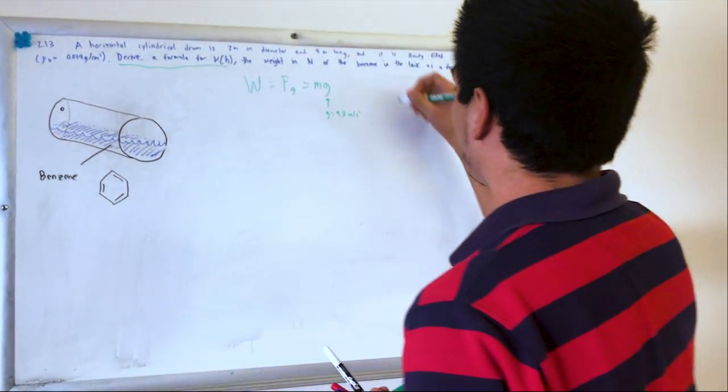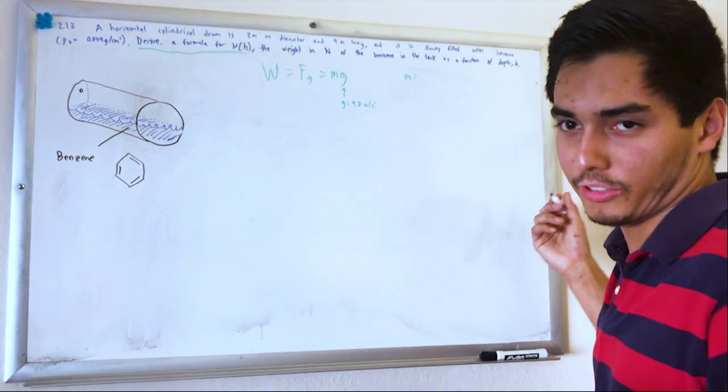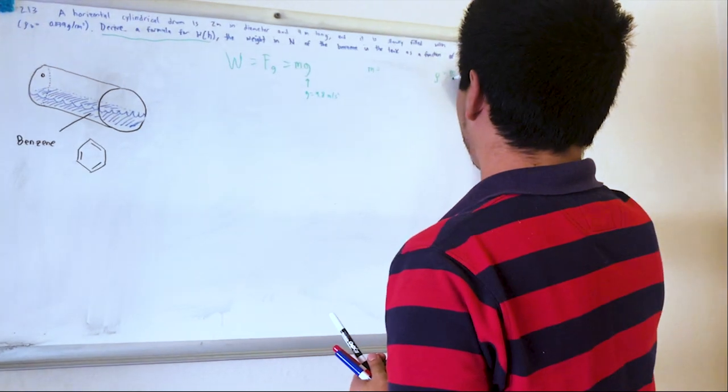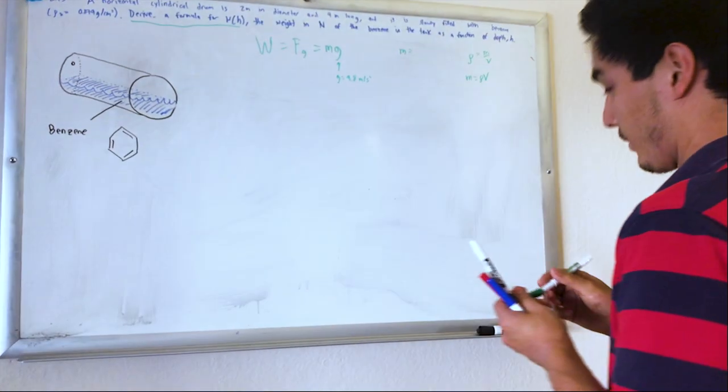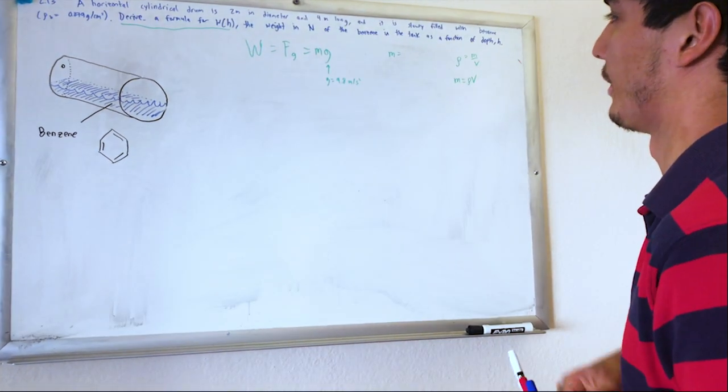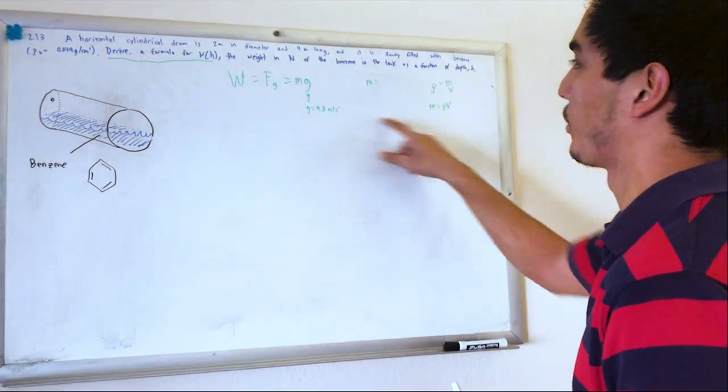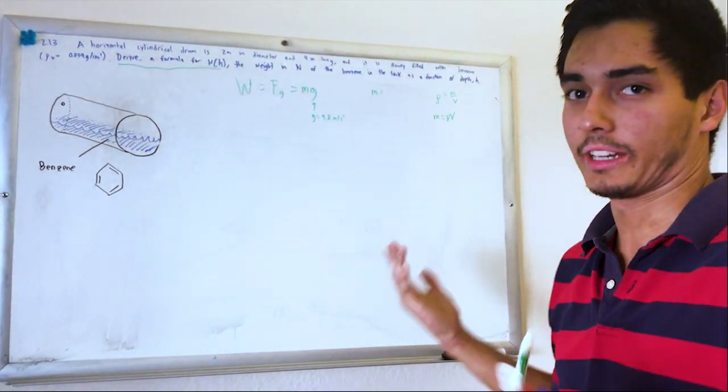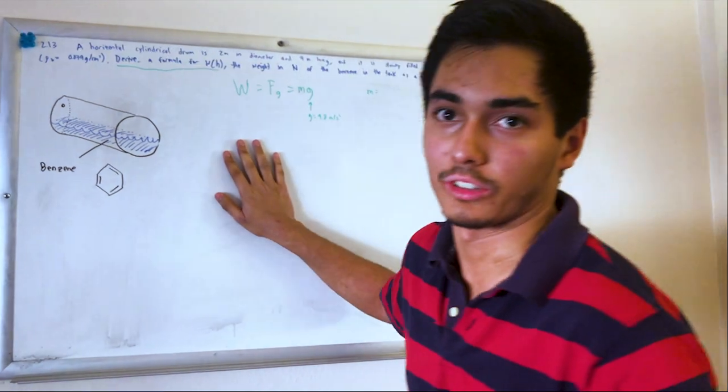And mass is gonna be, well maybe I should have wrote it last time. Density is mass over volume. So mass is density times volume. Okay so alright. Okay so we want to solve for the weight as a function of height. How do we get height? Well we need to solve for the volume as a function of height.